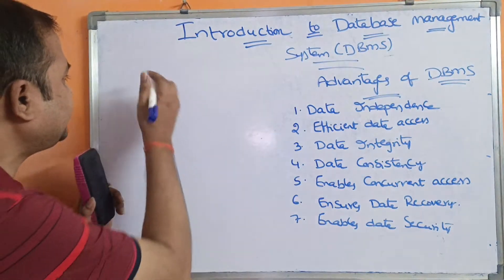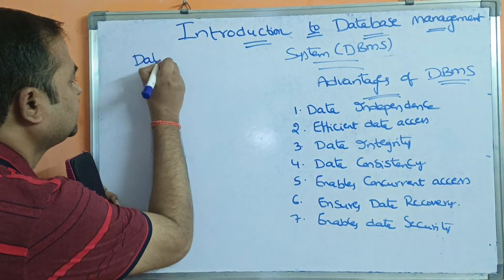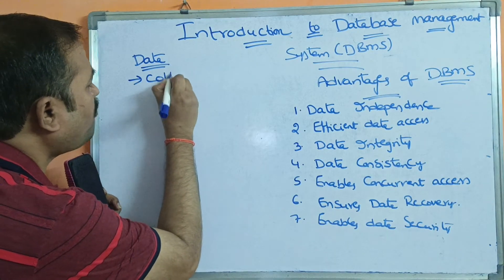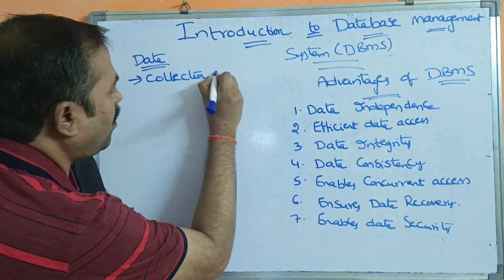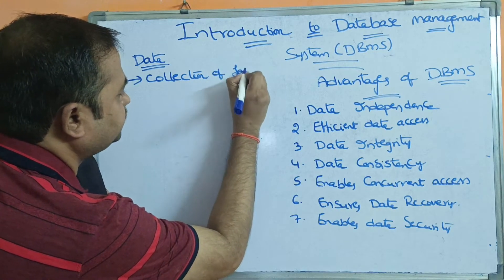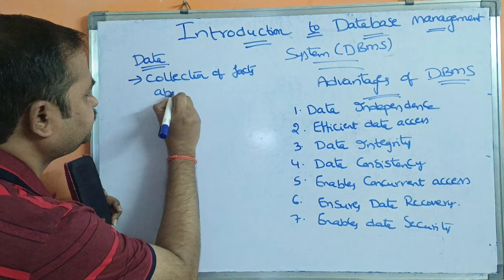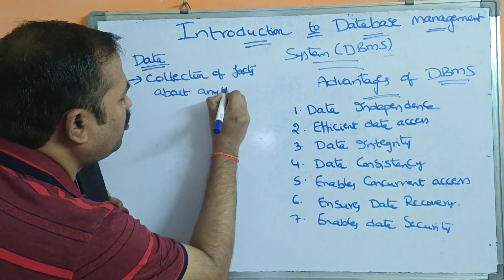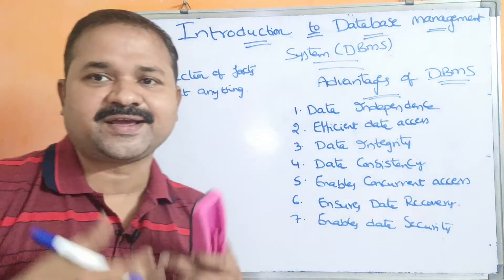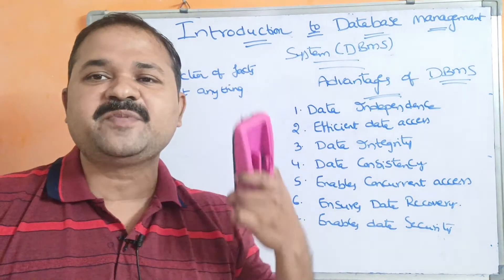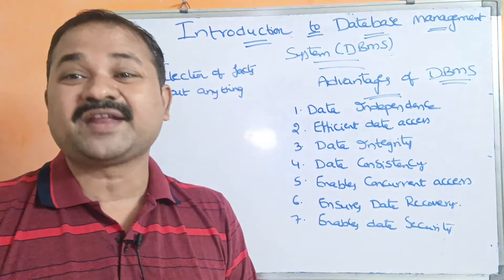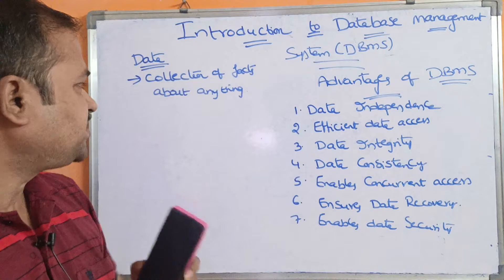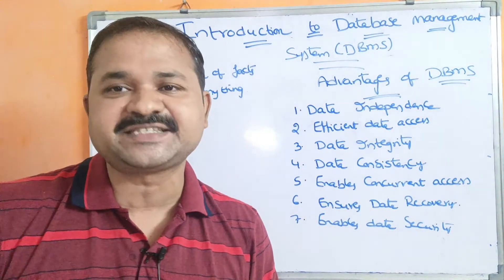First, let us see what is data. Data means it is a collection of facts about anything — it may be about a student, an employee, a university, or a hospital. A collection of facts about anything is called data.